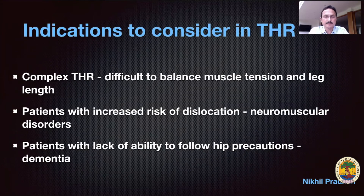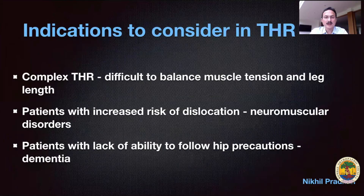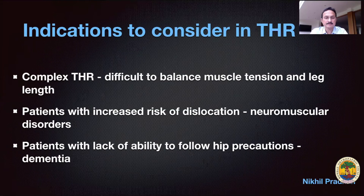The current indications are for complex total hip replacement where it is difficult to balance muscle tension and leg length, patients with an increased risk of dislocation such as neuromuscular disorders, patients with learning difficulties, and patients who lack the ability to follow hip precautions such as those with dementia or Alzheimer's.